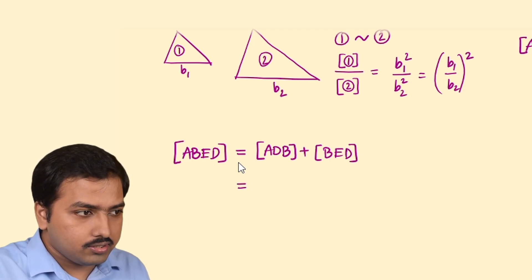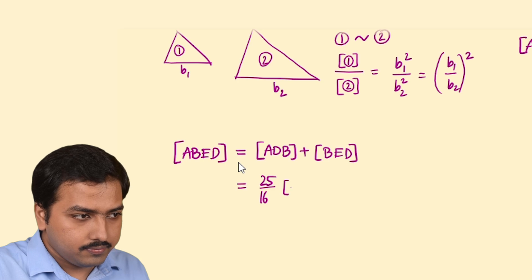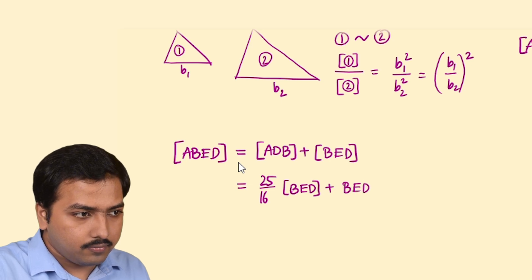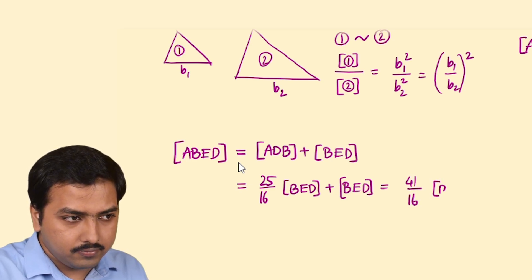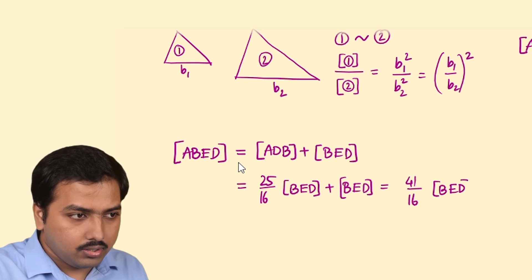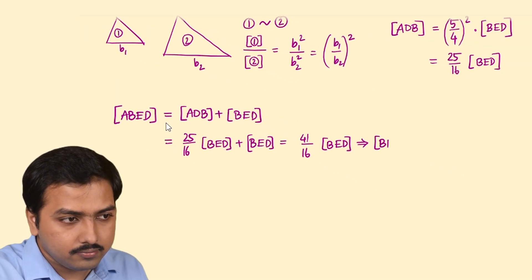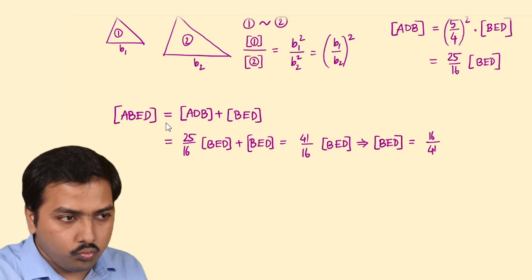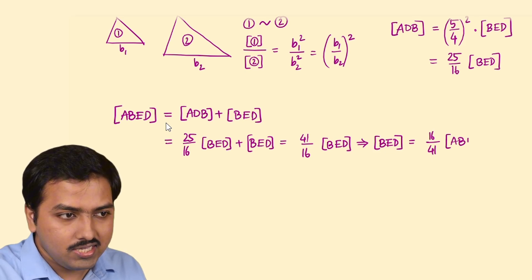Now area of ABED is area of ADB plus area of BED. So it becomes 25 upon 16 BED plus BED, so it becomes 41 upon 16 BED. That let me conclude BED is 16 upon 41 part of the trapezium ABED.